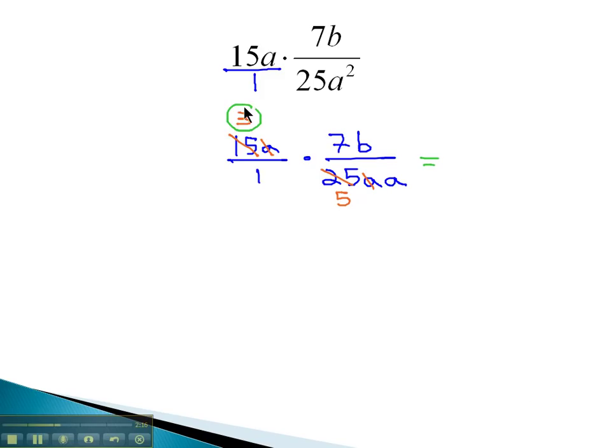What we have left is 3 times 7b, or 21b, over 1 times 5a, or 5a, and we have our final solution, 21b over 5a.